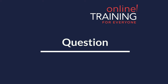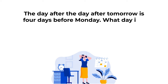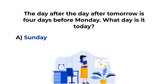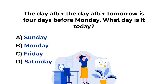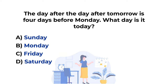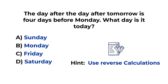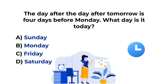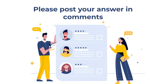Here is a practice problem: the day after the day after tomorrow is 4 days before Monday. What day is it today? You have four choices: A: Sunday, B: Monday, C: Friday, D: Saturday. Feel free to pause this video. A hint: the best way to solve these problems is using reverse calculations. Make sure to post your answer and your rationale in the comment section. Thanks for participating and good luck!